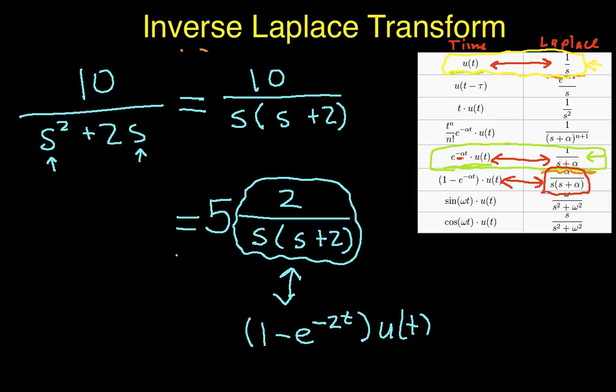So we can say that this transforms to 1 minus e to the minus 2t u of t, and my constant in front of it is 5. So I put that out there, and that gives me my time function.